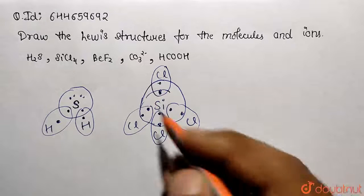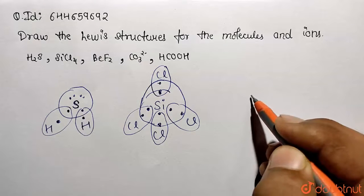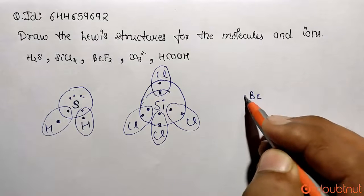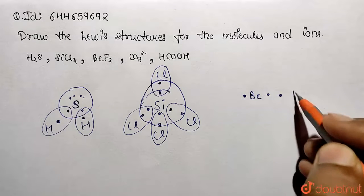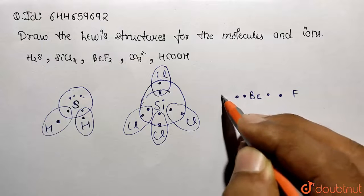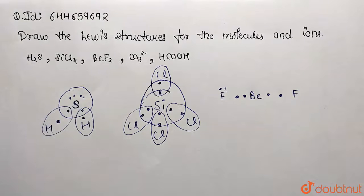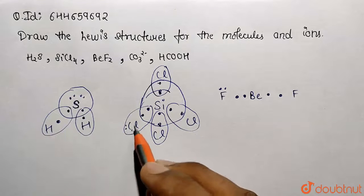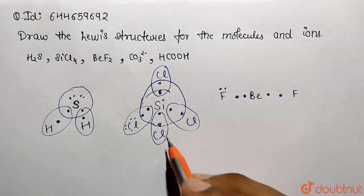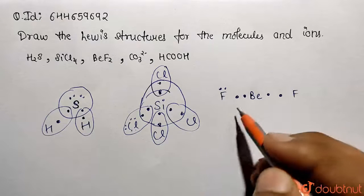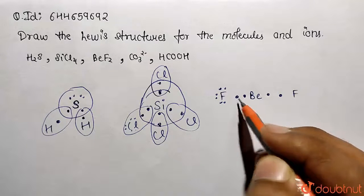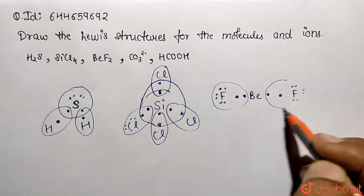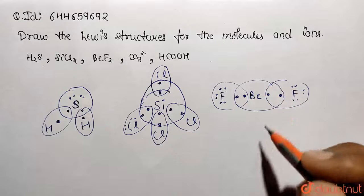Next is BeF2. Beryllium has two valence electrons—one and two. Each fluorine contributes one valence electron to bond. You can show the other electrons on fluorine—one, two, three, four, five, six, seven on each fluorine. The structure can become complex, so I'm simplifying, but you should mention all electrons. This is the BeF2 molecule.